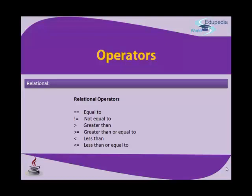The not-equals-to operator is the exclamation mark followed by equals (!=), meaning a is not equal to b. Then you have the greater-than sign (>), which is similar to math. Greater-than-or-equal-to is written as (>=). Less-than is (<). In mathematics you write less-than-or-equal-to with a line under the sign, but in any computer language you write it as (<=) separately.